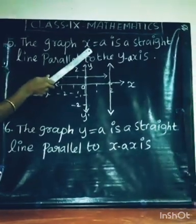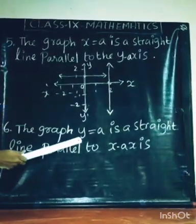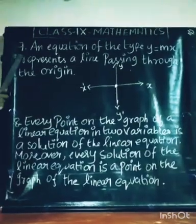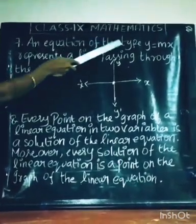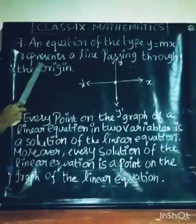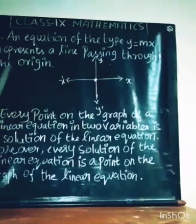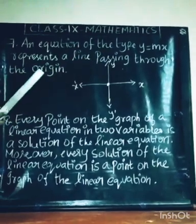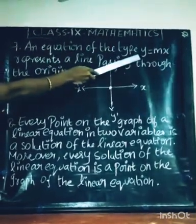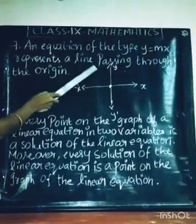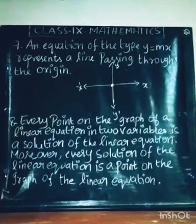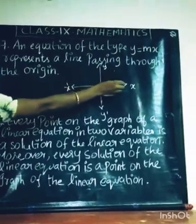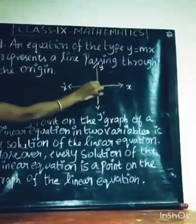So X equal to A is a straight line parallel to the Y-axis, and Y equal to A is a straight line parallel to the X-axis. Point Number 7: An equation of the type Y equal to MX represents a line passing through the origin. Origin means the point of intersection of the X-axis and Y-axis.